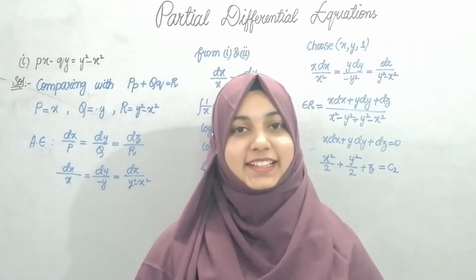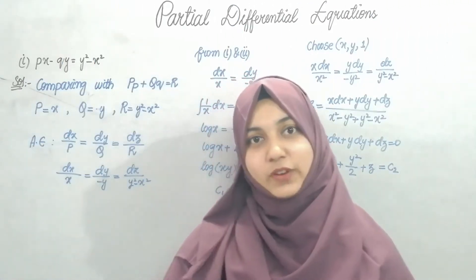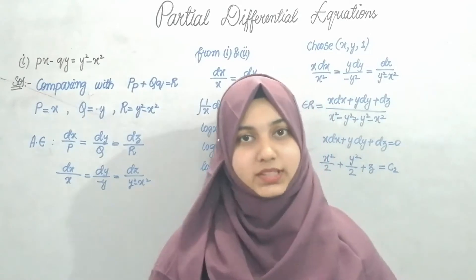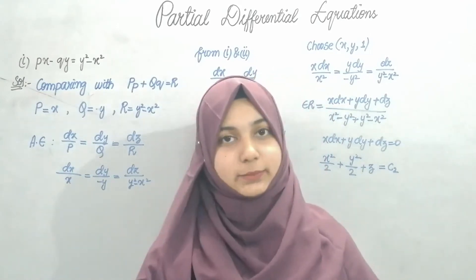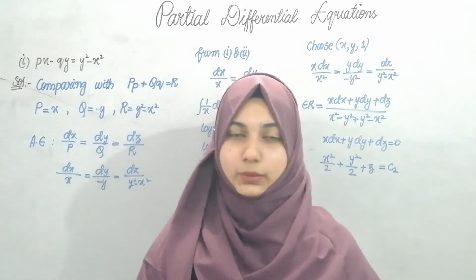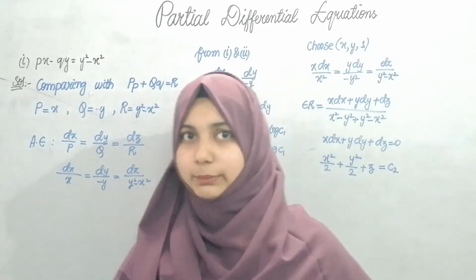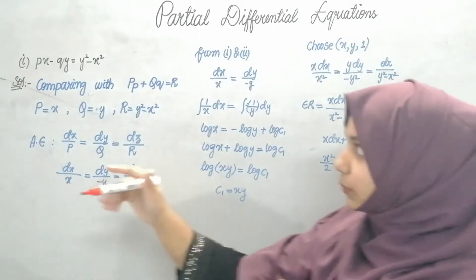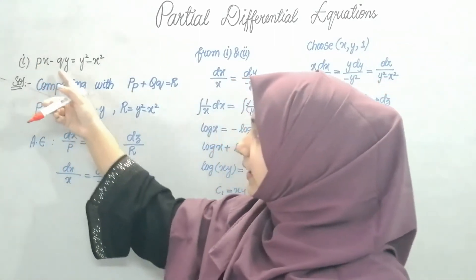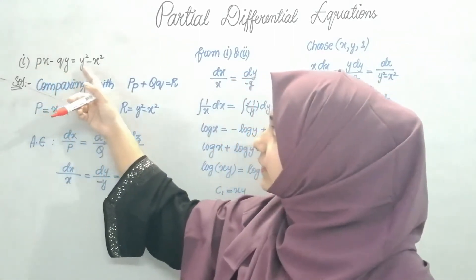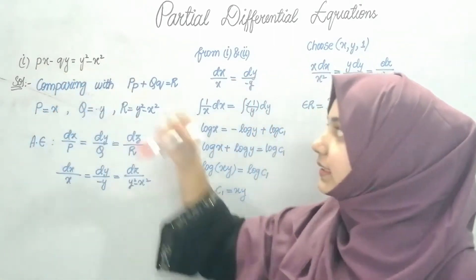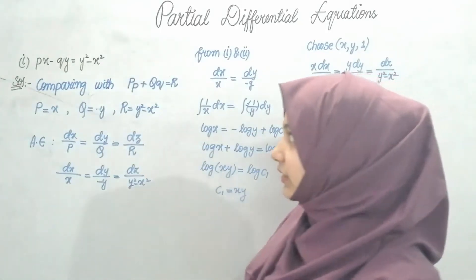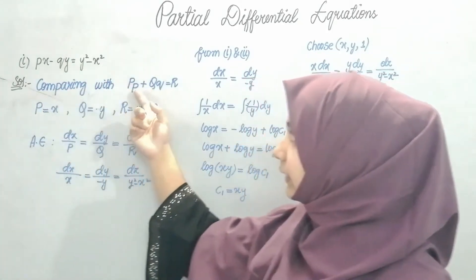Assalamu alaikum everyone. Before heading towards the types — Type 1, Type 2, Type 3, Type 4, and Charpit's method — we'll see one more example on Lagrange's form. Suppose the question given is: px minus qy equals y squared minus x squared.